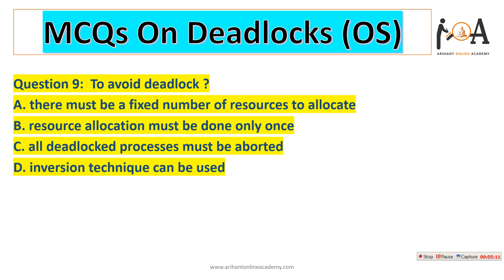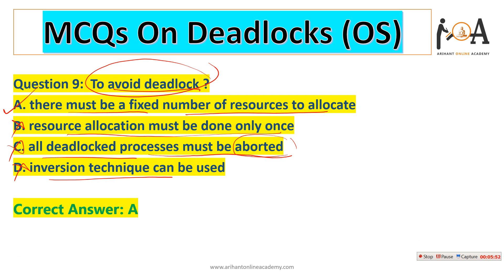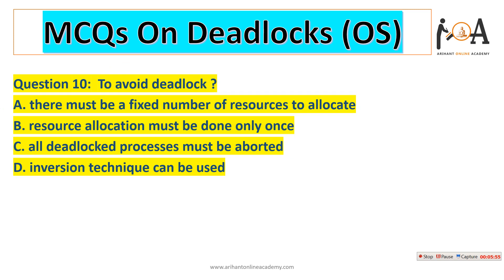The next question is: to avoid deadlock, what condition is required? Options are: there must be a fixed number of resources to allocate; resource allocation must be done only once; all deadlocked processes must be aborted; or inversion technique can be used. Aborting processes affects them, and doing allocation only once may cause further deadlocks as processes increase. So option A — there must be a fixed number of resources to allocate — is the correct answer.